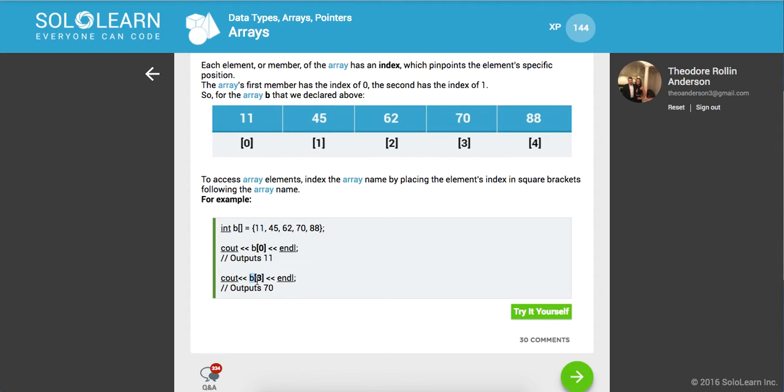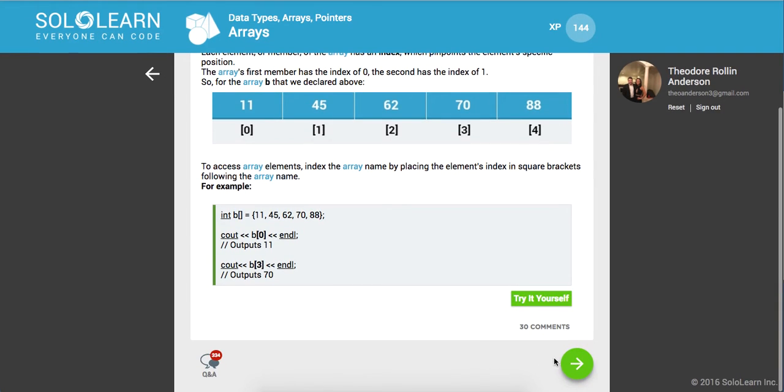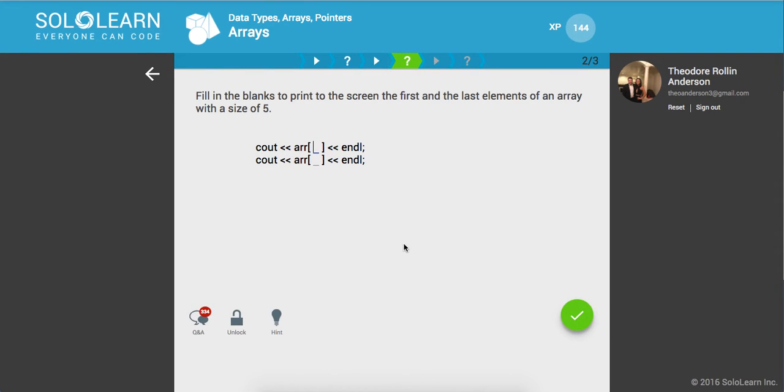In a similar case now we have three because we're starting at zero. We got zero, one, two and three. So this is going to return back to us the value of 70. Fill in the blank to print to the screen the first and the last elements of an array with size of five. So first is going to be array[0] and last is going to be array[4].